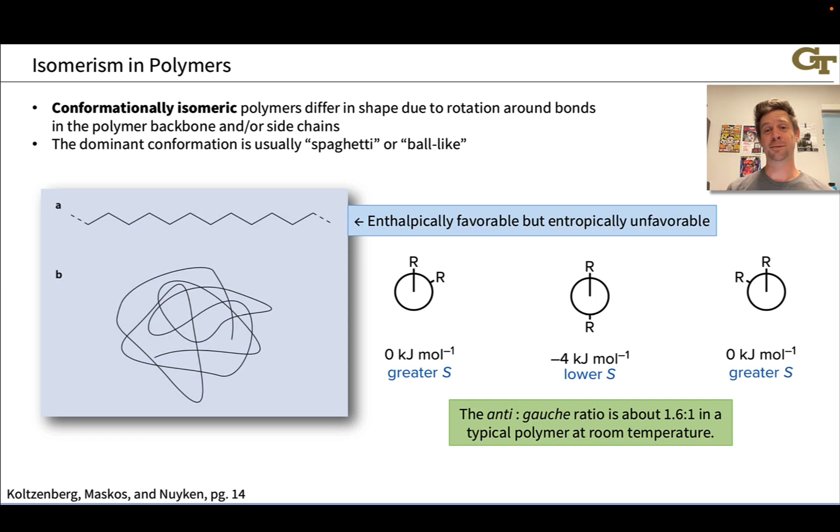The most subtle level of isomerism in polymers is conformational isomerism. A polymer with given structure, even given three-dimensional structure in terms of configuration, can occupy a variety of conformations. There are innumerable ways to rotate around bonds within a long polymer chain. Typically, we think of the polymer chain as looking like a ball of yarn or like a collection of spaghetti, something with the chain wrapped around randomly. This is what's going to be favorable entropically. Entropy is going to encourage random rotation around each of the bonds in the polymer backbone.